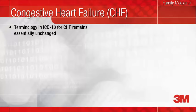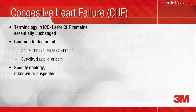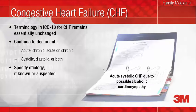ICD-10 terminology describing congestive heart failure remains essentially unchanged from ICD-9. However, there is currently an opportunity for improvement in documenting this diagnosis. To provide an accurate picture of the patient's severity of illness and risk of mortality, you should specify whether the patient's congestive heart failure is acute, chronic, or acute on chronic, and whether it is systolic, diastolic, or a combination of both. Additionally, you should document the cause or etiology of the congestive heart failure when known or suspected. An example of excellent documentation would be acute systolic heart failure due to possible or suspected alcoholic cardiomyopathy.